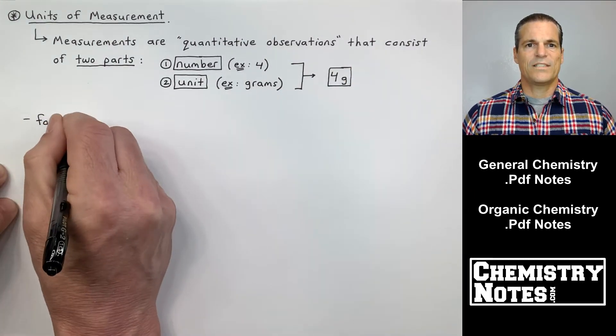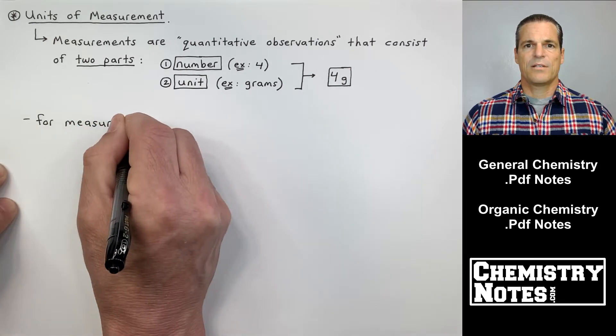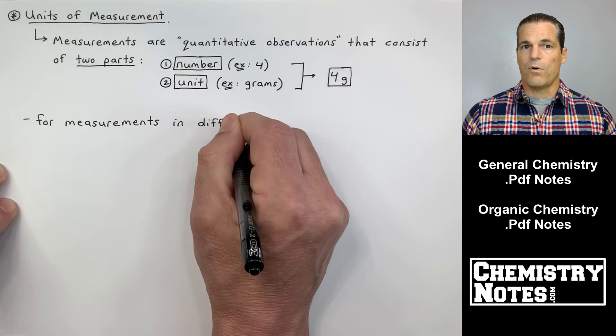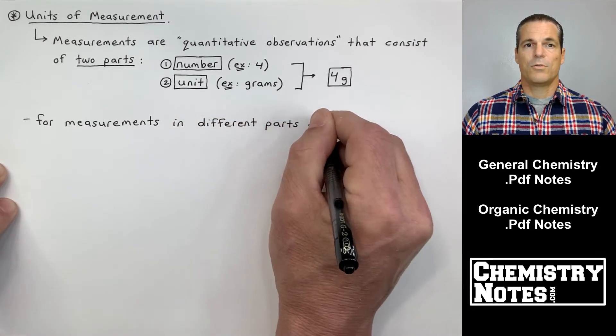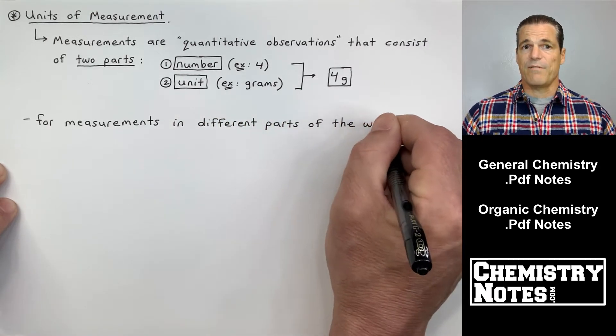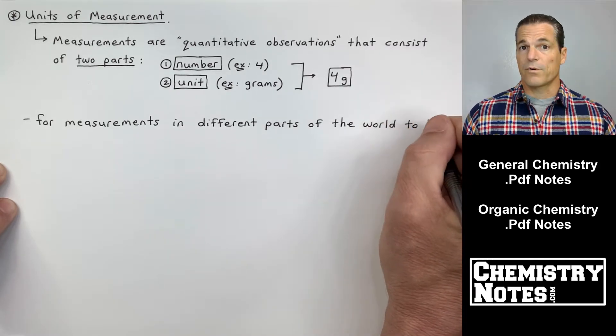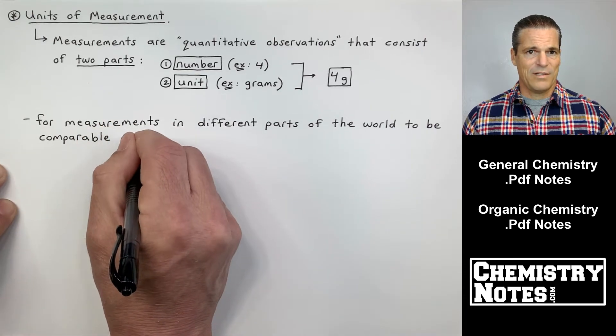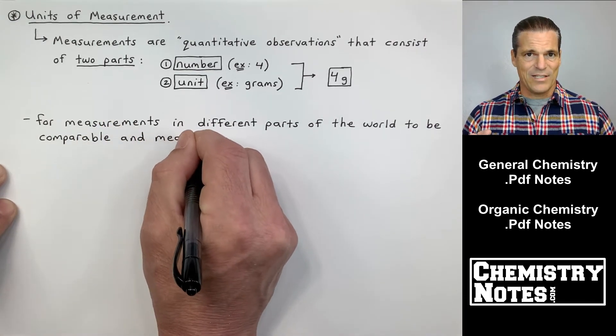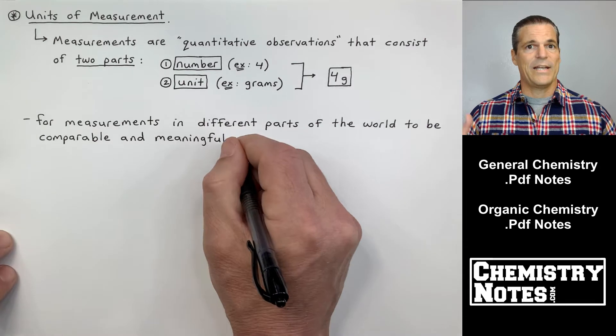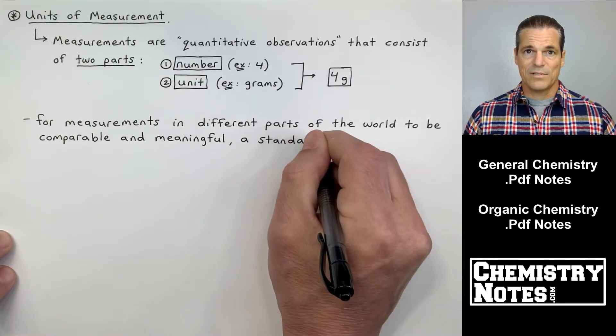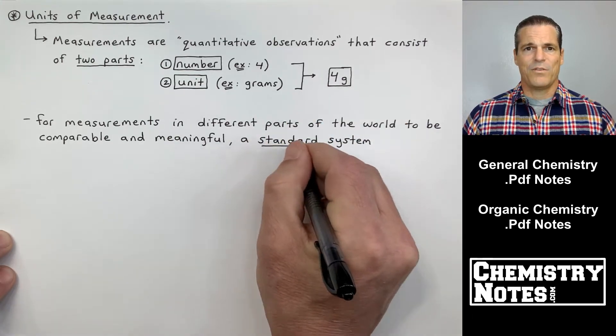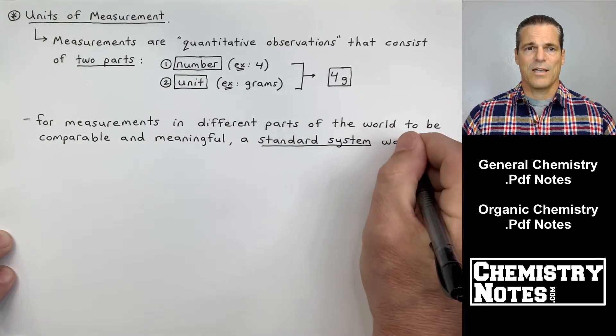Measurements are quantitative observations that consist of two parts: a number, for example four, and a unit, for example grams. You put those two guys together and you have a measurement. For example, four grams. Now, believe it or not, the unit is actually more important than the number because the unit kind of dials in a little closer than just a plain old number about where you are at. So grams will be more important than the four. A lot of people leave off units. You have to include your units in every measurement.